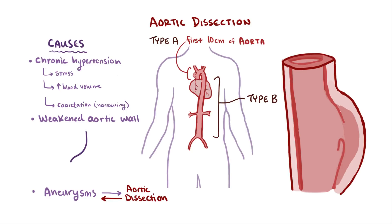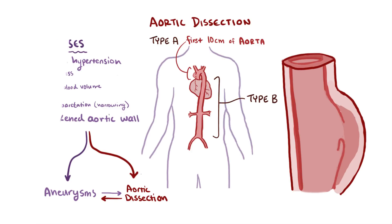In other words, weak walls can lead to an outpouching of the blood vessel or a break in the tunica intima, and both of these weaken the walls further.